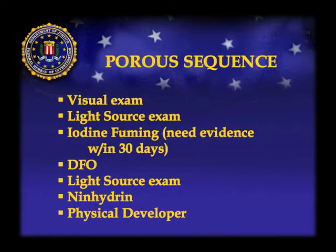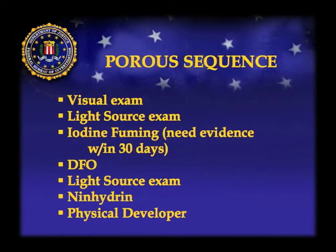Here's the general processing sequence we use in the lab. The first thing we do with any item of evidence is a visual examination — look at all angles, use oblique lighting. Then we do a light source exam using UV light, laser light, the crime scope, and any alternate light sources we see fit. Iodine fuming is something we don't do a whole lot anymore — evidence has to be less than 30 days old. One of the more common chemicals we use in the laboratory is DFO.